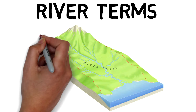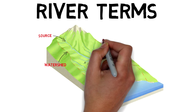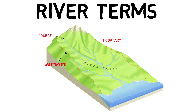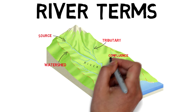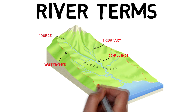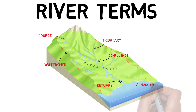We'll start off with the river terms. As you can see from this diagram, we have the river source — this is where the river begins. Next up, we have the watershed, which is the area of land where precipitation or rain collects and drains off into the river. Here we have a tributary, which is a smaller river that runs into the main river. There's a confluence, which is the point where the tributary meets the river. We have an estuary, which is the tidal part of the river. And finally, we have the river mouth, which is the part of the river where it meets the sea.